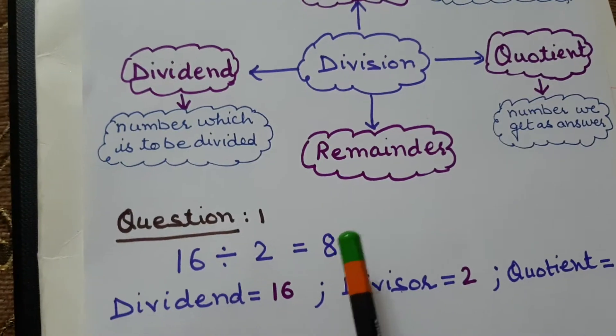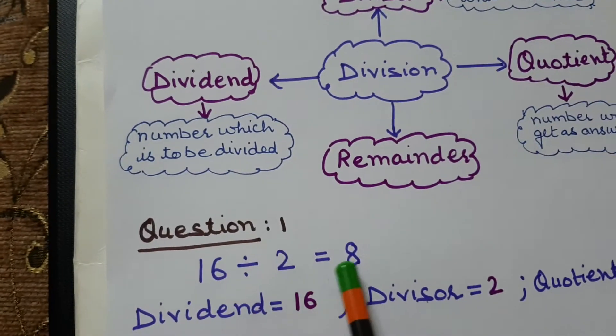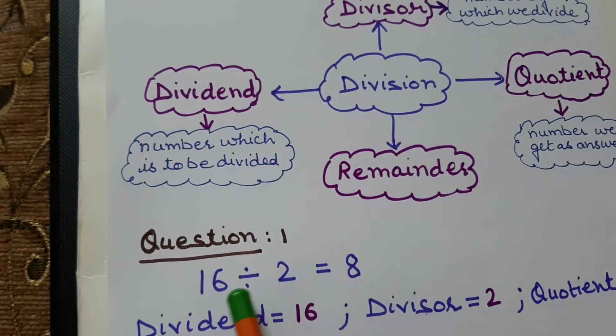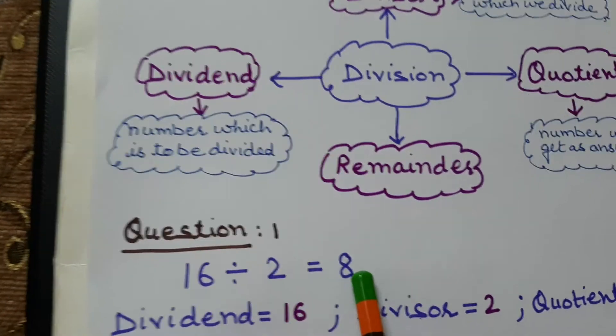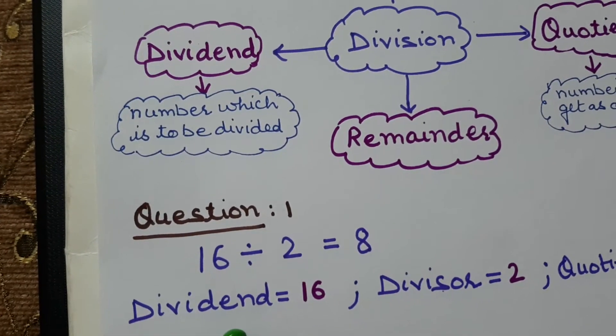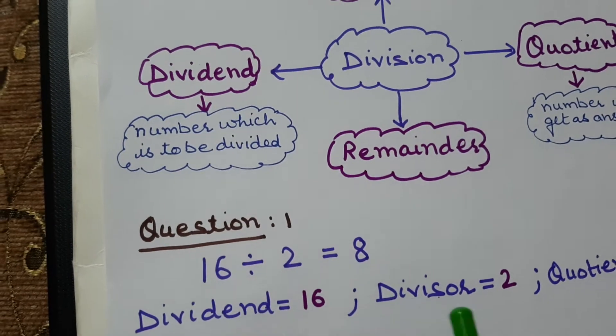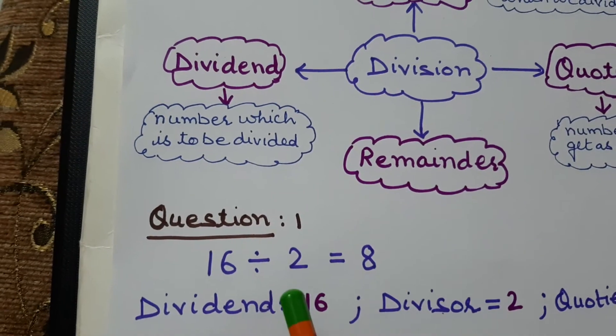So now we will do one sum. Suppose this question is given to you. 16 divided by 2 is equal to 8. Now dividend, you have to find dividend, divisor and quotient in this sum. You have to identify these three terms.